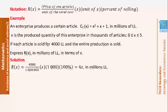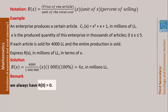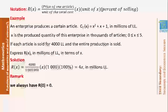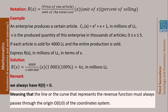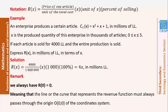An important note: R(0) equals 0, since x is a factor in this rule. This means that the curve representing the revenue function always passes through the origin (0, 0) in the coordinate system.